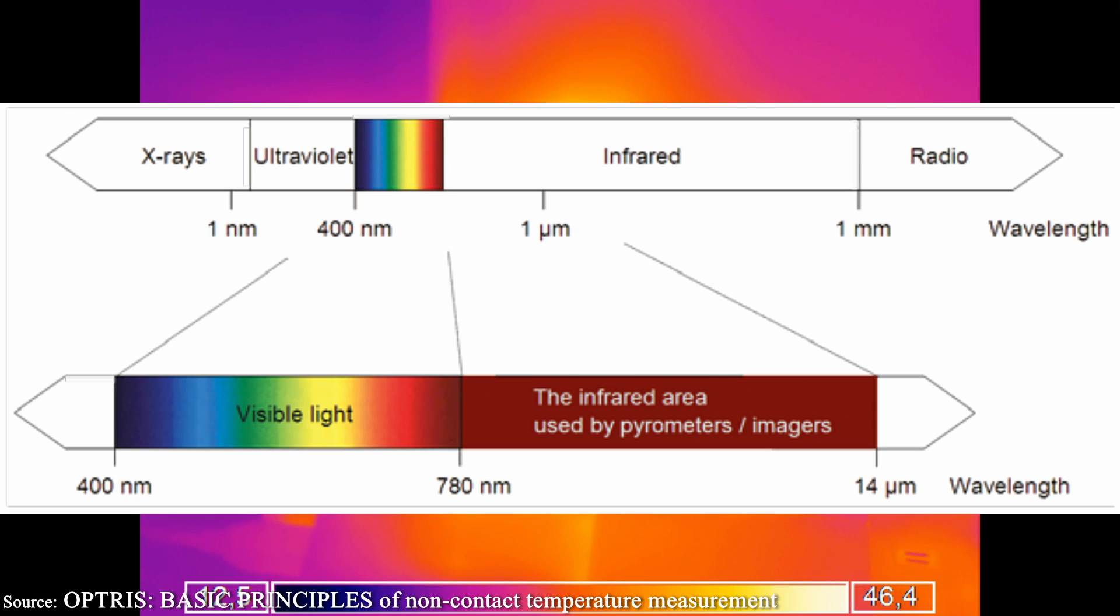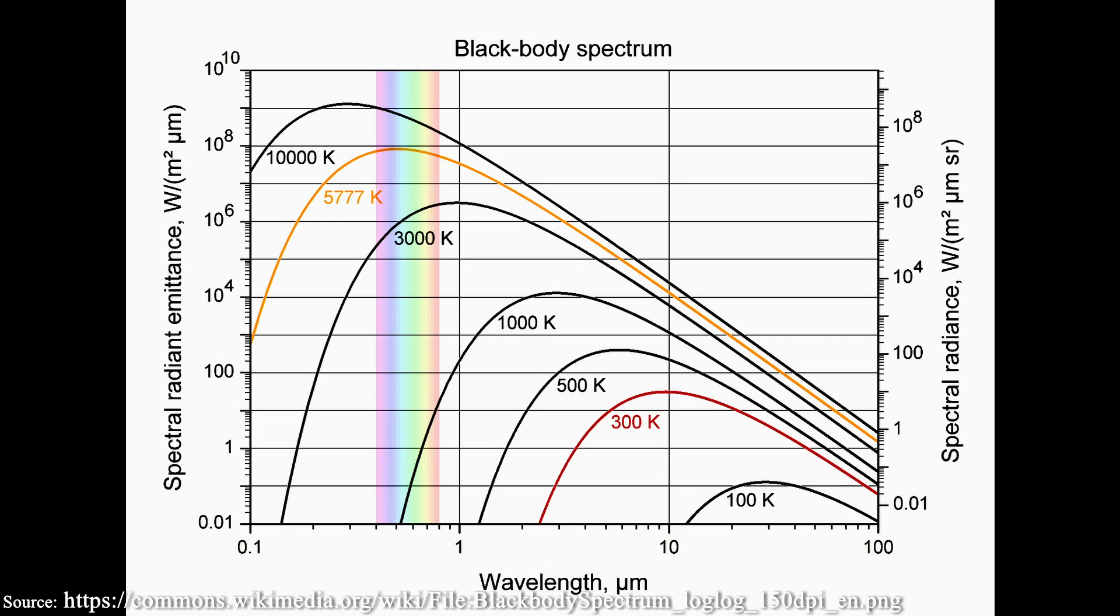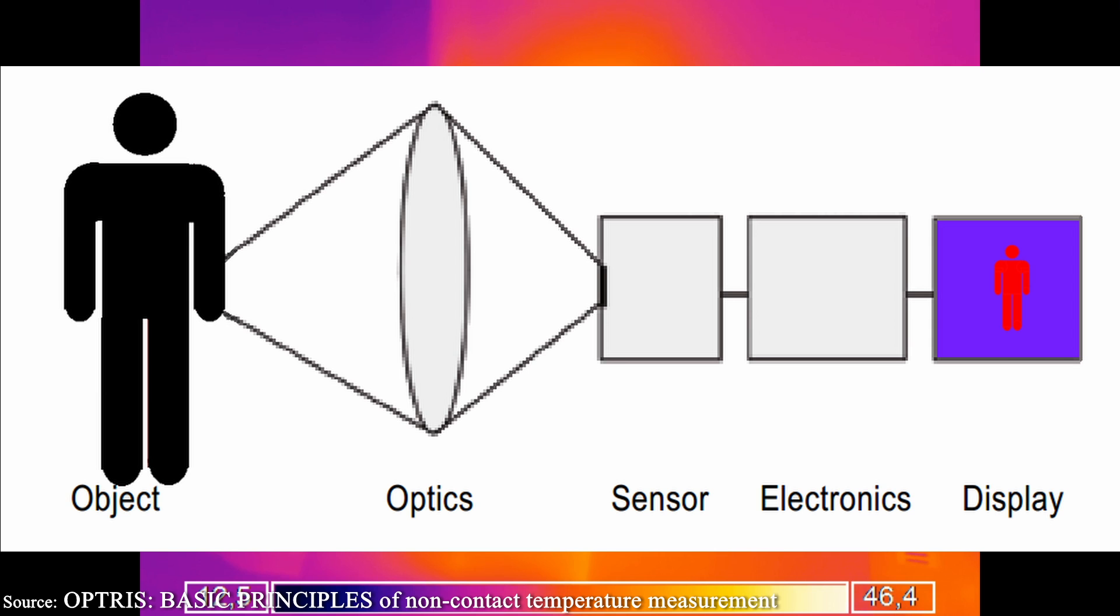Every body emits infrared radiation in some way. In this diagram you can see the relationship between temperature of the body and the emitted light. So the camera picks up this infrared light and can calculate the temperature through the light intensity and some other factors, like emissivity.